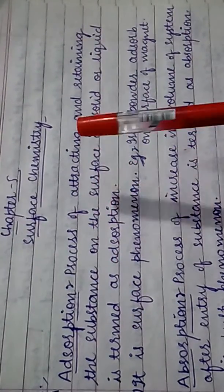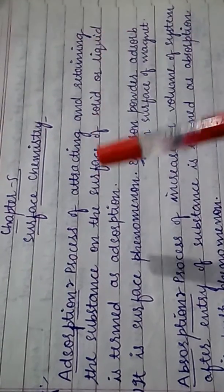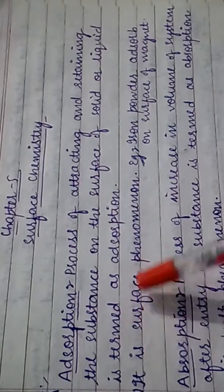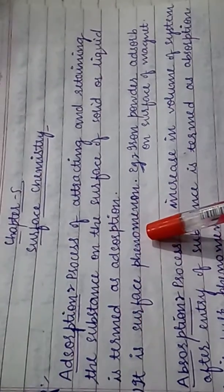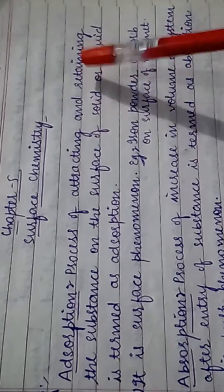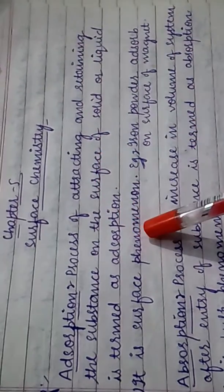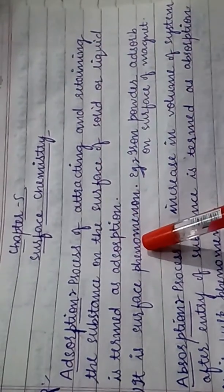First of all, adsorption. The process of attracting and retaining a substance on the surface of a solid or liquid is termed as adsorption. This means a substance is attracted or retained, and it is a surface phenomenon. Why is it a surface phenomenon? Because the substance attracted or retained is on the surface of a solid or liquid.